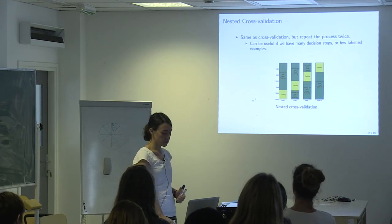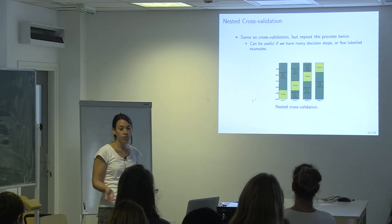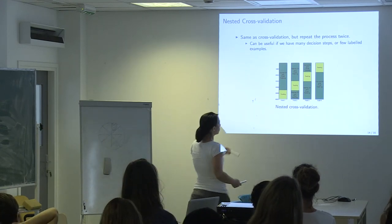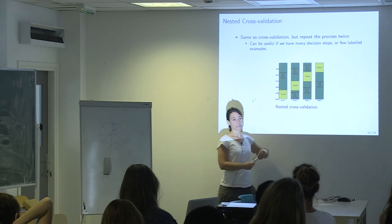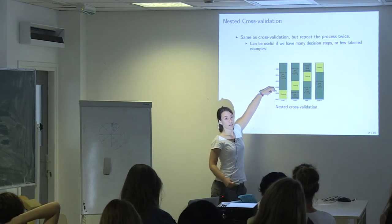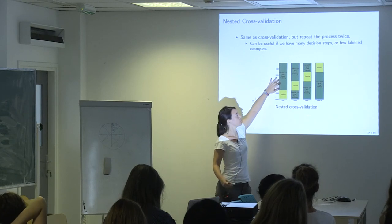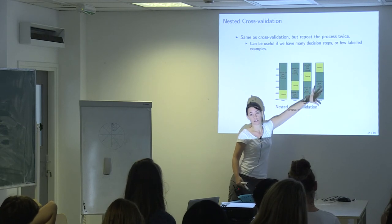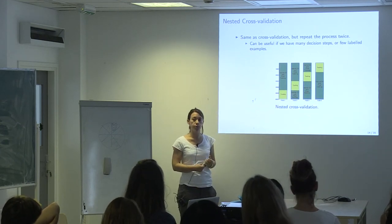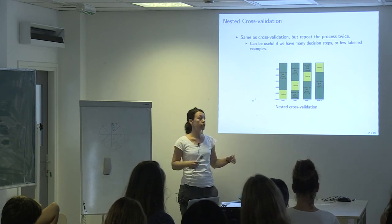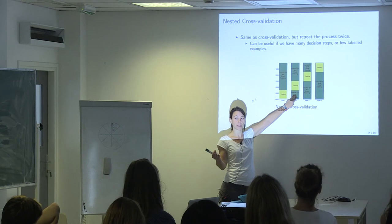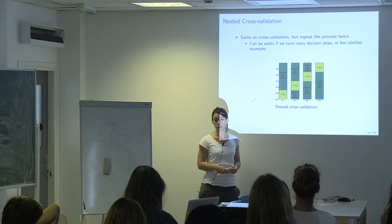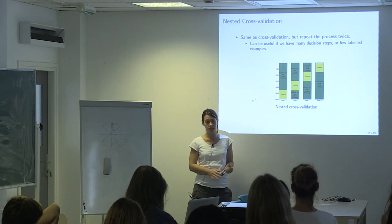Nested cross-validation follows the same principle but splits the testing part first, then applies further folds within each training split to select model parameters. You might do three folds in each inner loop for model selection. However, this procedure could lead to a different lambda parameter for each outer fold's testing, so you need to make some decisions — but we won't go into those details in this lecture.